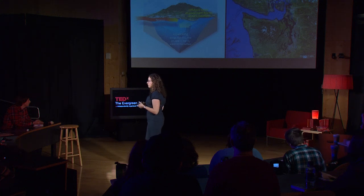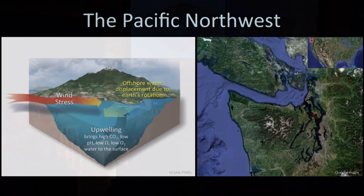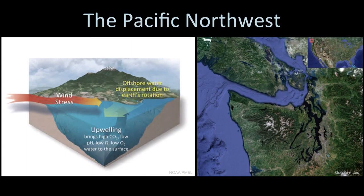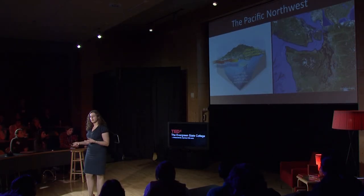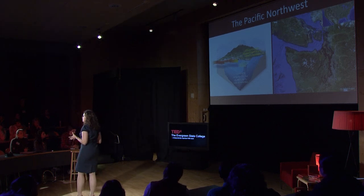So I've talked about global patterns, but I'm supposed to be talking about Washington State. It turns out that because of where we sit in the circulation of the world's oceans, our ocean waters are naturally pretty acidic compared to other places around the world. There are three spots in the world where ocean acidification is occurring very rapidly: here in the Pacific Northwest, the Southern Ocean off of the Antarctic, and up in the High Arctic. So we're at one of the three hot spots for ocean acidification.